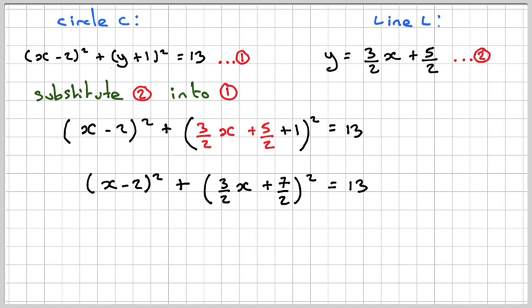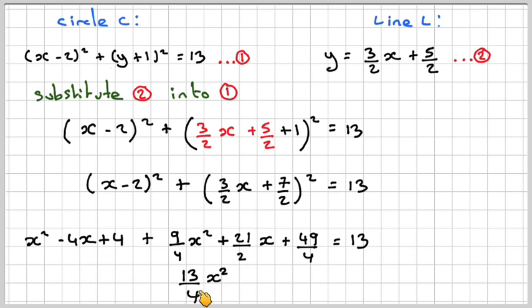The expansion of (x - 2)² is x² - 4x + 4. Then we're going to get (9/4)x² + (21/2)x + 49/4 = 13. Collecting like terms together, we'll get (13/4)x² - 4x + (21/2)x, which gives (13/4)x² + (13/2)x + 65/4 = 13.